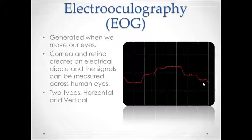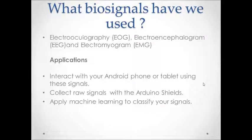People have asked me what kind of biosignals I have used for my project and what they do. For this project, we collected EEG and EOG signals from human eye movements and brain activities to use them to interact with your mobile device. You would be able to control your Android phone, a tablet, or play games on your device just by moving your eyes or thinking about it. You can also collect raw biosignals using our Arduino shields and explore machine learning.